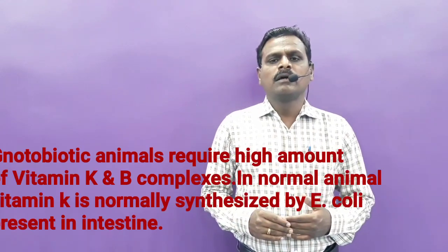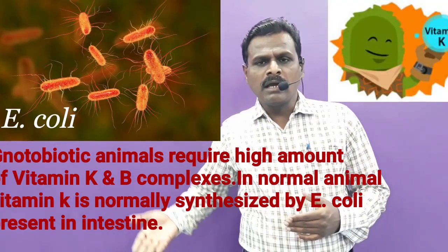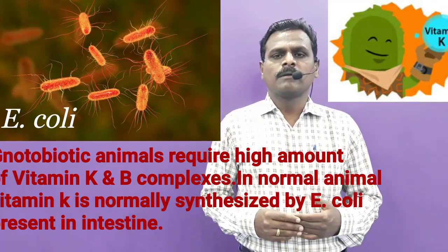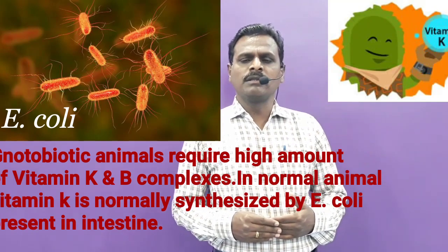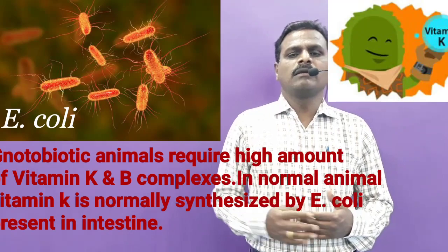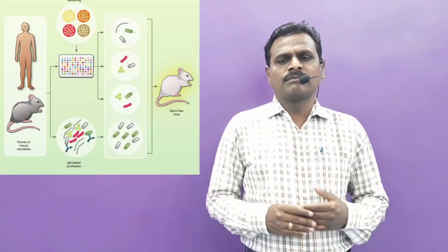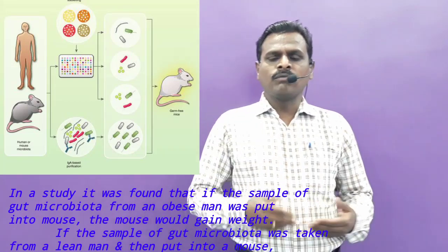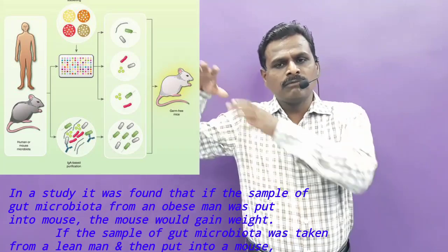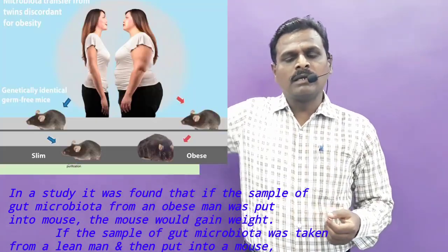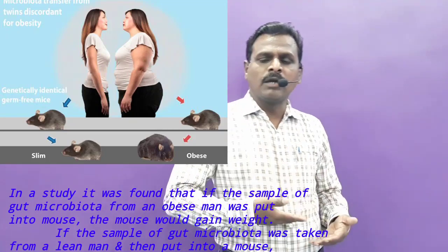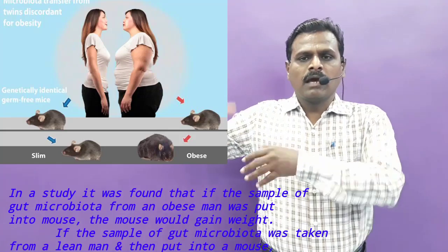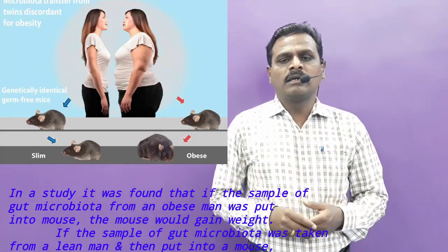Notobiotic animals require high amounts of vitamin K and B complexes. In normal animals, vitamin K is synthesized by E. coli present in the intestine. In one study, gut microbiome samples from an obese man were introduced into mice, and the mice gained weight. When gut microbiome from a lean man was introduced into mice, no weight gain occurred — demonstrating how bacteria affect the health of an animal.